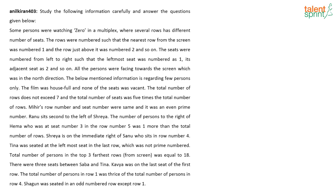Some people are watching a movie in a multiplex. There are several rows and each row has a different number of seats. The rows were numbered such that the nearest row from the screen was numbered 1 and the row just above it was numbered 2 and so on. The seats were numbered from left to right as 1, 2, and so on.